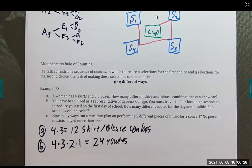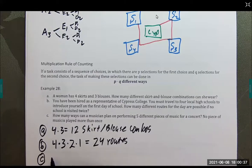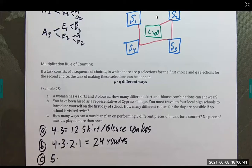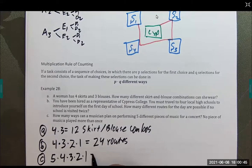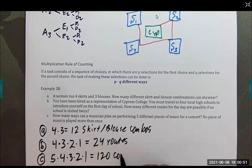Part C: how many ways can a musician plan on performing five different pieces of music for a concert, where no piece is played more than once? We start with five choices, then four, then three, then two, then one. That is going to be 120 combinations of music.